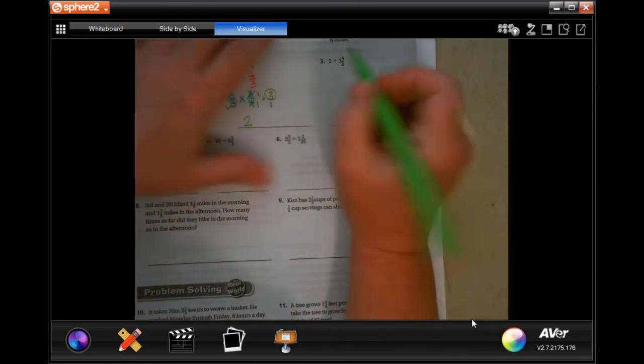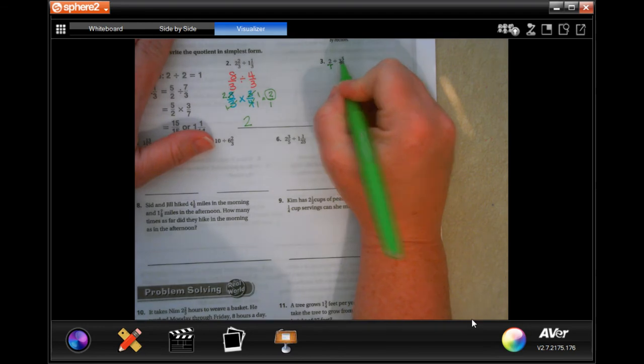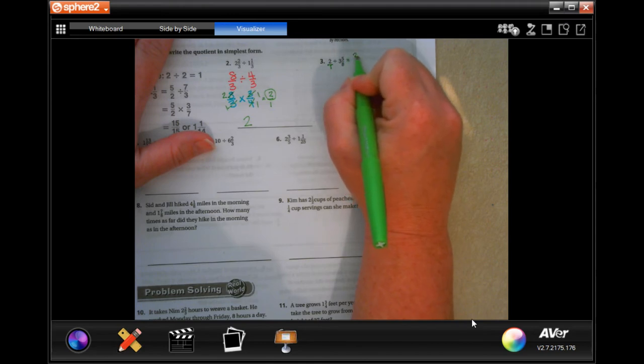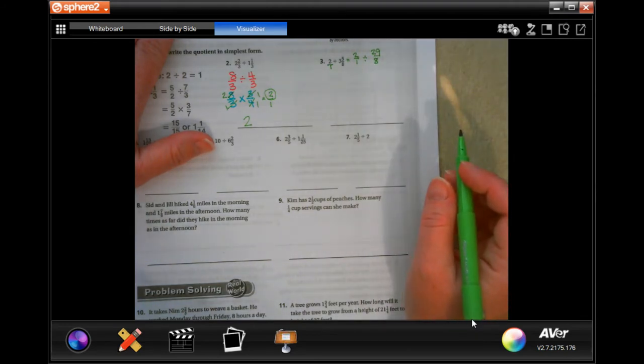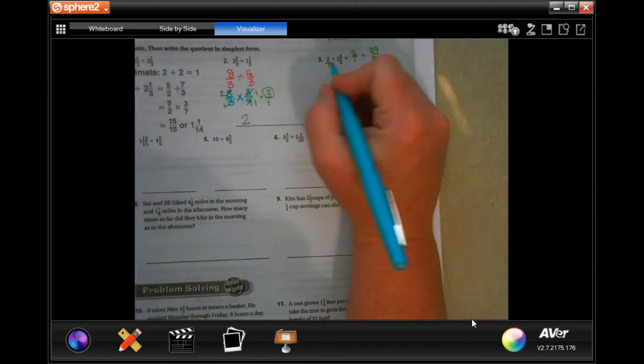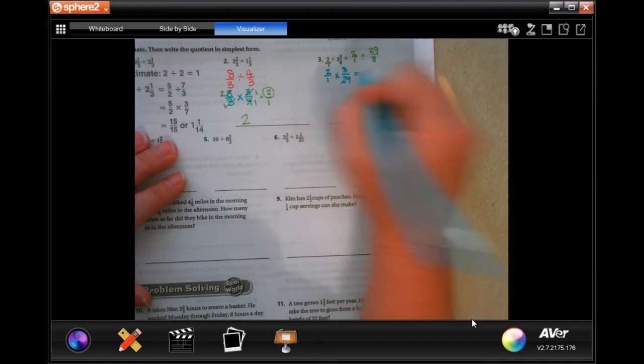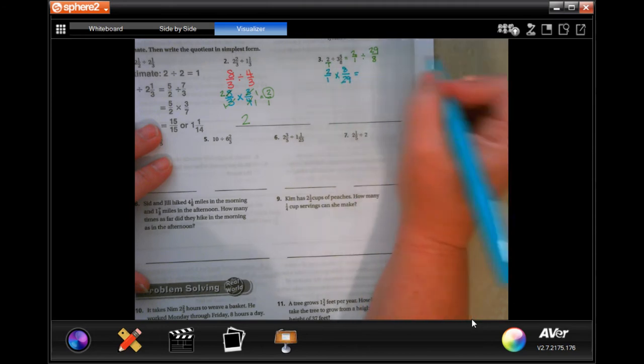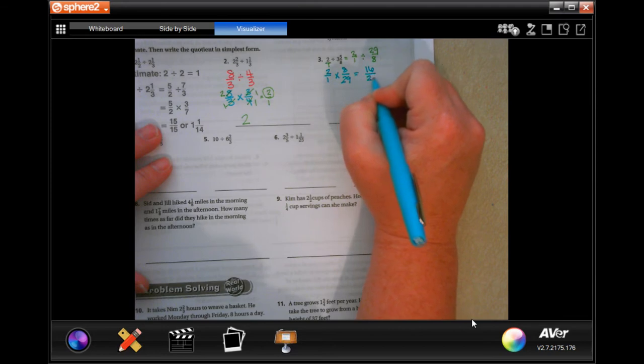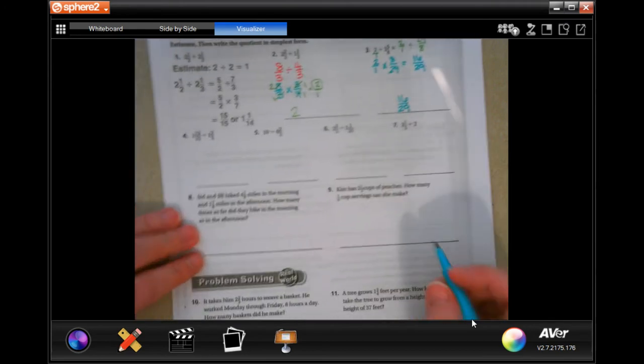So now we're going to get started on the next one. 2 over 1, because we need a fraction. 8 times 3 is 24, plus 5 more is 29. So I'm going to rewrite this. Now it wants us to keep, change, and flip. Unfortunately, we can't reduce anything. 29 is not an even number. 8 doesn't go into 29, so 2 can't go into 29 because it's not even, which means that I'm just going to get 16 over 29. My final answer here is 16 over 29.